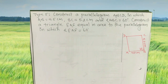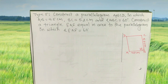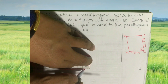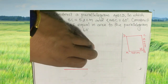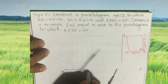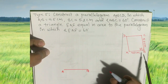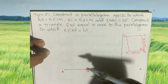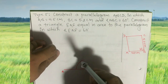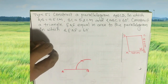To construct parallelogram ABCD, AB is equal to 4.5 centimeter, so make line AB of 4.5 centimeters — this is point A and this is point B. At B, the angle is 60 degrees, so make an angle of 60 degrees at B, make an arc, cut it, and join it. It is 60 degrees.